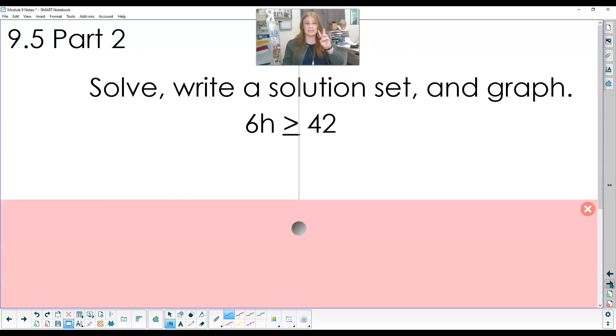So for our last part, we are going to solve, write, and graph a solution set. So we have 6H is greater than or equal to 42. These are exactly like balancing equations. The opposite of 6 times H is dividing by 6 and I have to keep it balanced on both sides. So I do the same thing to both sides. Show that work. So that cancels out. So I'm left with H and I just bring down my symbol. Bring it down exactly like it was. And now I have 42 divided by 6 which is 7. So H is greater than or equal to 7. It is exactly like solving an equation. You bring your comparing symbol down.